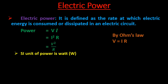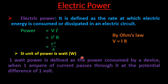The SI unit of electric power is watt, represented by capital W. One watt is defined as the power consumed by a device when one ampere of current passes through it at a potential difference of one volt. From the formula P = VI, when V = 1 volt and I = 1 ampere, power = 1 × 1 = 1 volt-ampere, which equals one watt.